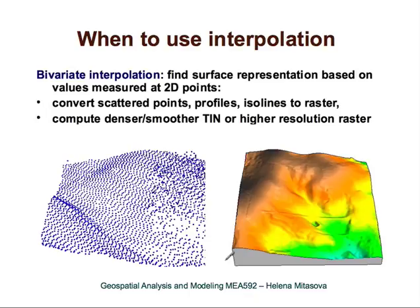So when do we need to use interpolation? We will use it to convert scattered points, profiles, or isolines — all of them are points — to raster. We also need to use interpolation when we want to compute denser or smoother representations, and when we want to resample to higher resolution a raster that represents continuous data such as elevation.